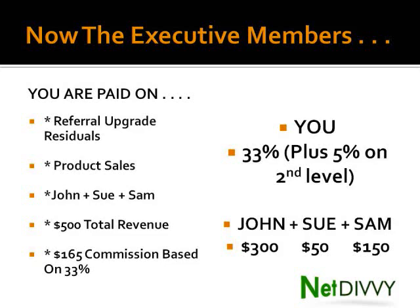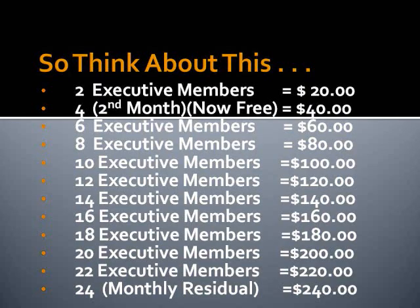As an executive member you're paid on all referral upgrades each month as residual commissions. You're also paid 33% on all product sales from executive members you brought into the system, plus 5% on the second level for affiliates. Using the same example — John spent $300, Sue $50, Sam $150 — that's $500 total revenue, and at 33% that's a powerful $165 commission.